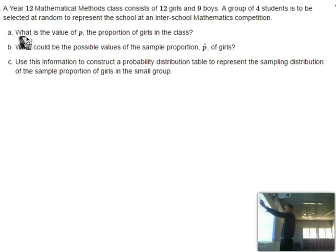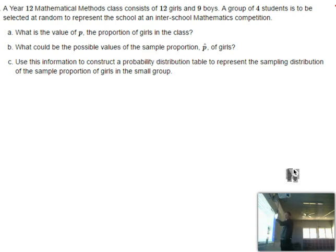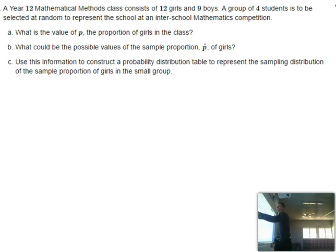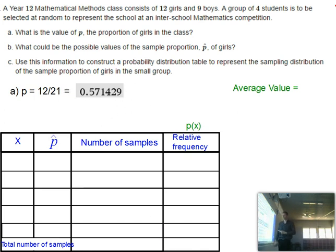So first off, part A: what is the value of P? P was the population parameter — the proportion of an observed outcome in the population. We want to know what is the proportion of girls in the class. There are 12 girls. How many are in the class altogether? We've got a population proportion of 12 out of 21 in the class.